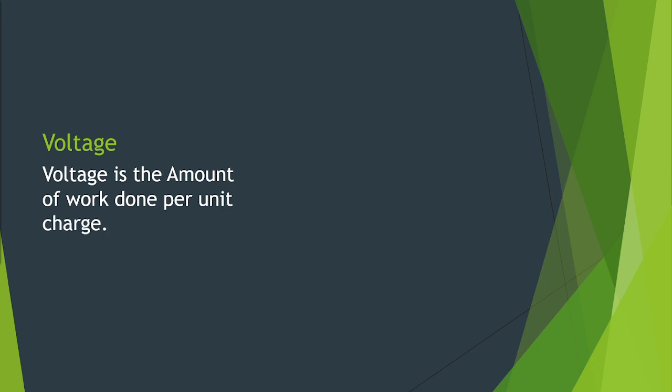We now define voltage. Voltage is the amount of work done per unit charge. We have voltage V is equal to work W over charge Q. We have a formula for the work done and this is equal to the electric force F multiplied by the displacement D divided by the charge Q. We also know that F sub E is equal to the electric field E times charge Q. When substituted to the formula we find that voltage V is equal to the product of electric field E and the displacement D.